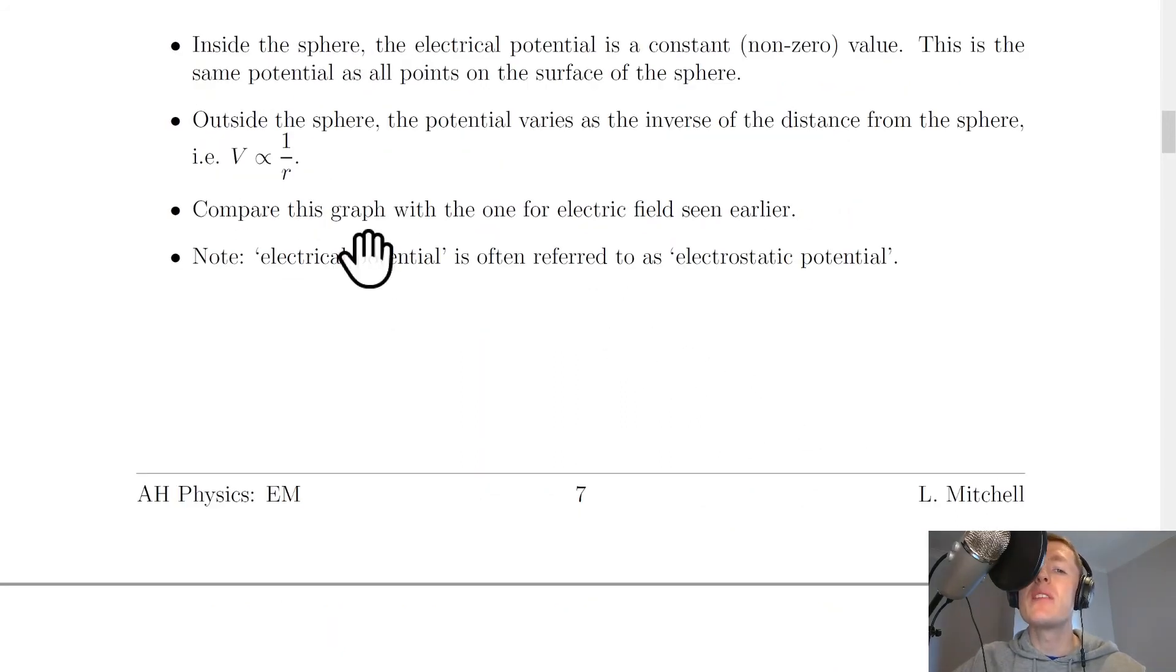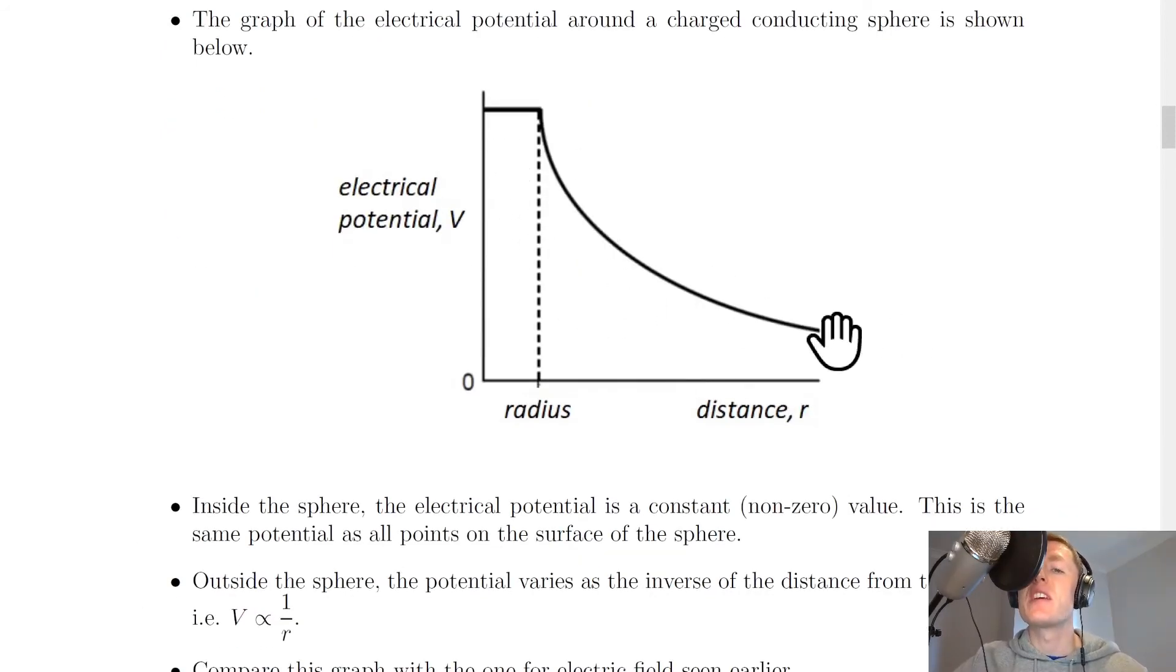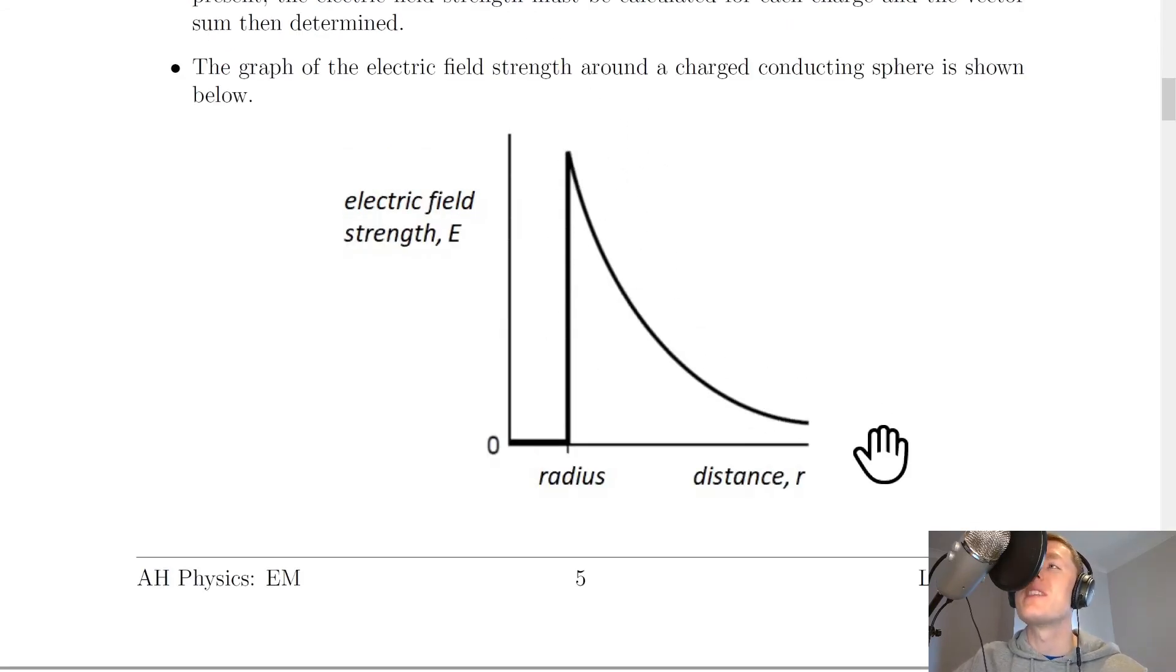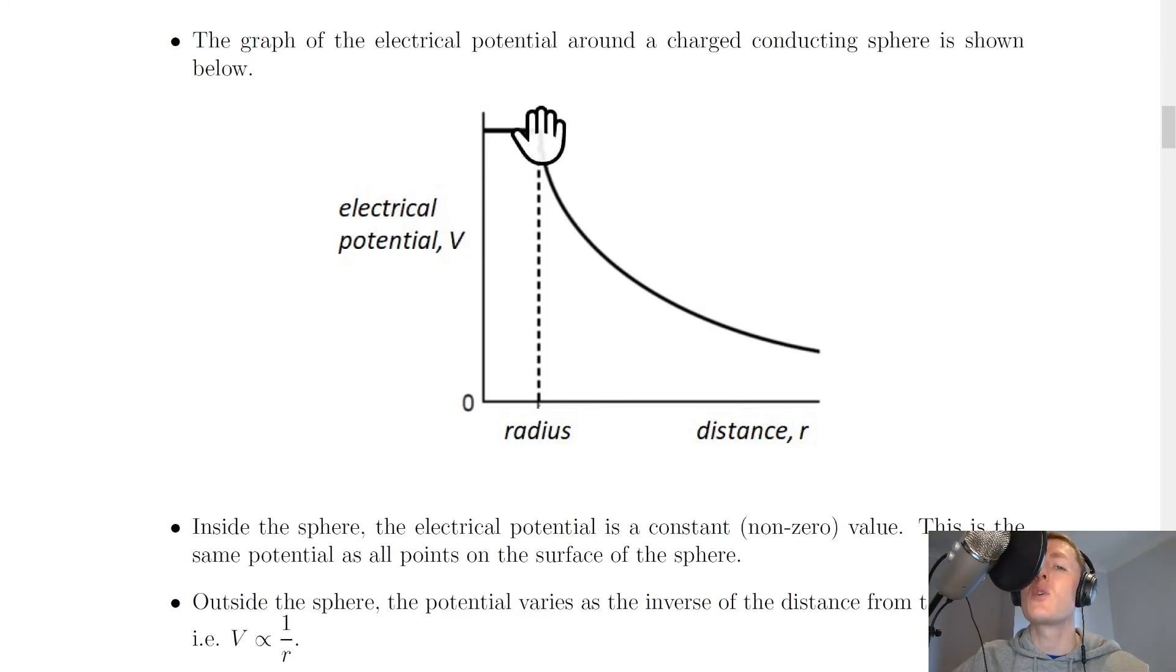It then says to compare this graph with the one for electric field seen earlier. So here's our graph for electrical potential against distance R. And here's our graph for electric field strength against distance R. So remember inside a conductor, the electric field strength is zero, but it's maximum on the surface. And then it would drop off quickly with distance. Whereas for electrical potential, we have this non-zero value inside the charge. And then the electrical potential starts to drop off with distance, but not as rapidly as the electric field strength.